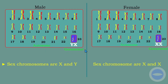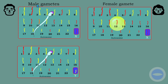These cells undergo meiosis. Meiosis produces gametes by halving the number of chromosomes from 46 to 23. In males, meiosis produces two types of sperm cell: one sperm cell contains an X chromosome at the sex chromosome, and one sperm cell contains a Y chromosome.